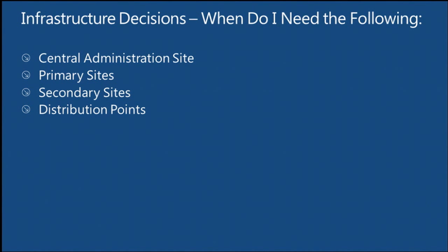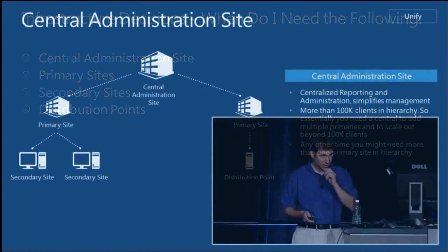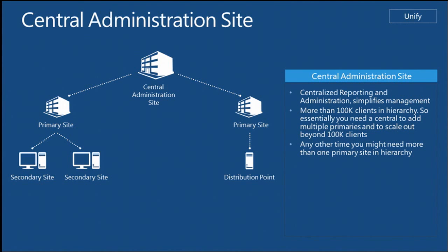When thinking about infrastructure decisions, we look at the major site systems: the central administration site (CAS), primary sites, secondary sites, and distribution points. In CM12, you need a central site for centralized reporting and administration. We really don't want you to have a CAS if you don't need one. You need a CAS when you know you're going to have multiple primaries — essentially scaling out beyond 100,000 clients. If you don't need a CAS, I would suggest not doing that.